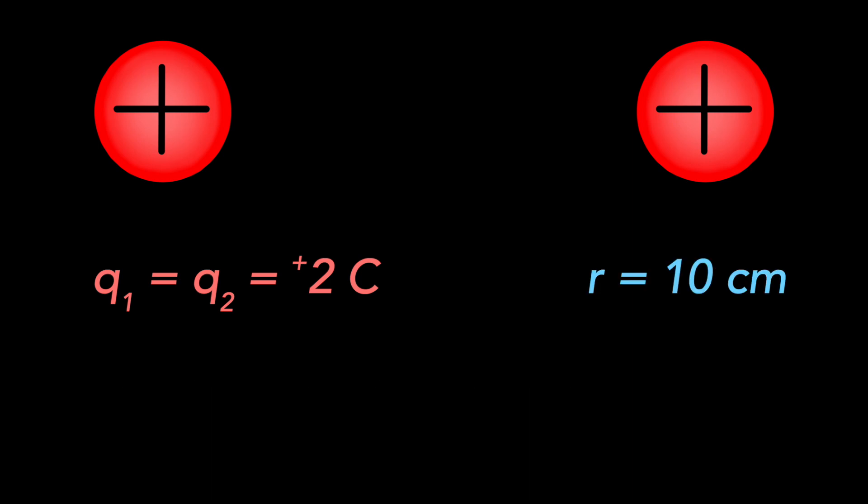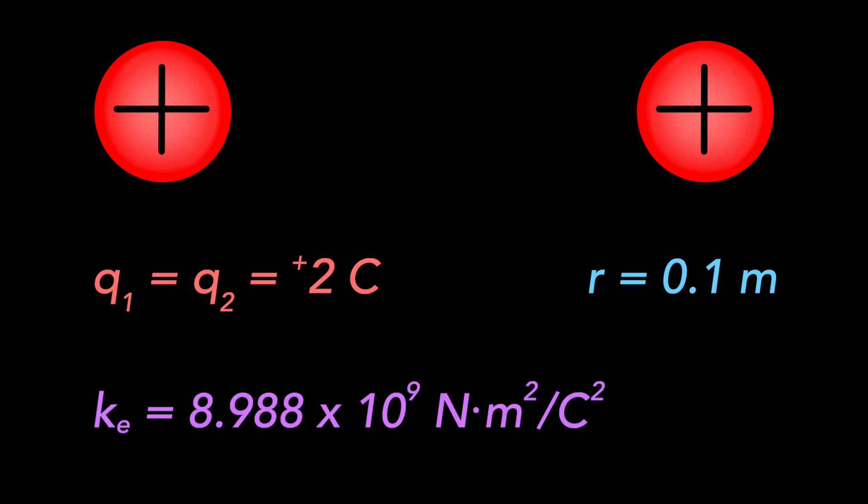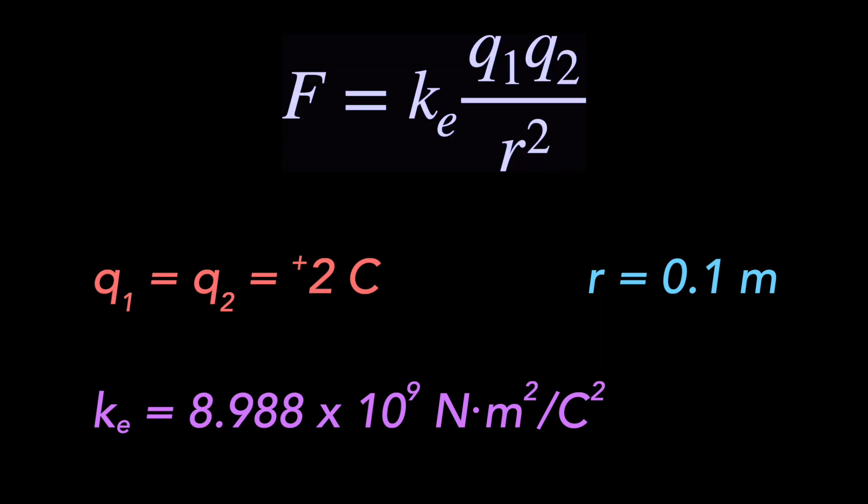These particles are 10 centimeters apart, or 0.1 meters. The last piece of information we need is the value of that electric constant. Feel free to pause the video now, and try to make this calculation on your own. Play it again when you're ready, then I'll show you my own working.